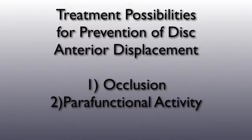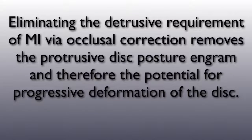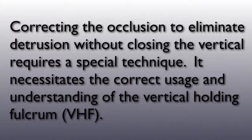The two main modes of treatment to prevent anterior disc dislocations are to correct the occlusion to eliminate the detrusion that might be present in MI, and to address those stressors which may be contributing to the parafunctional activity or bruxism, which is the destructive force. We address the occlusal problem by eliminating the detrusive requirement of MI via occlusal correction, to remove the protrusive disc posture engram and therefore the potential for progressive deformation of the disc. Correcting the occlusion to eliminate detrusion without closing the vertical requires a special technique involving the correct usage and understanding of the vertical holding fulcrum, abbreviated as the VHF.